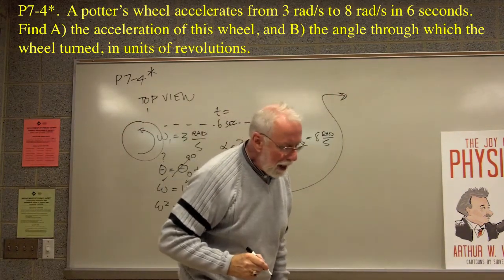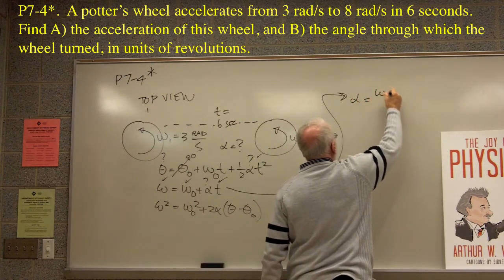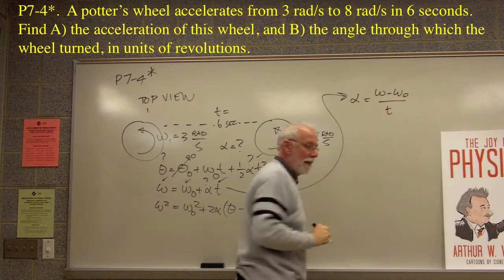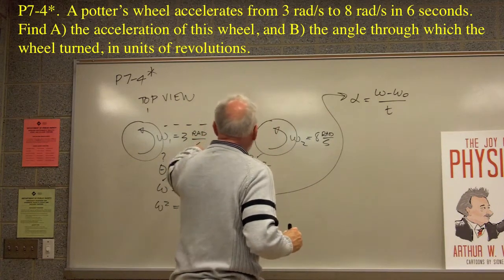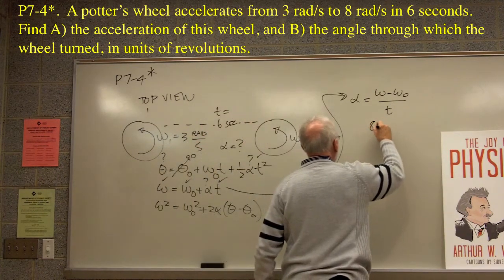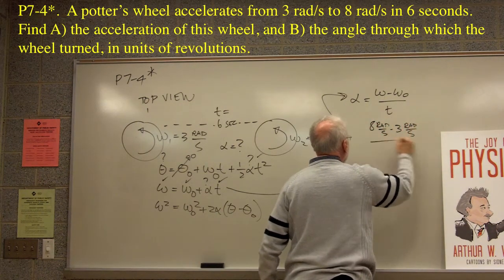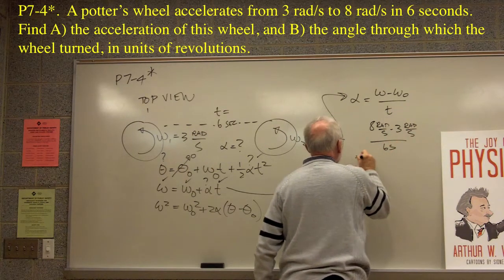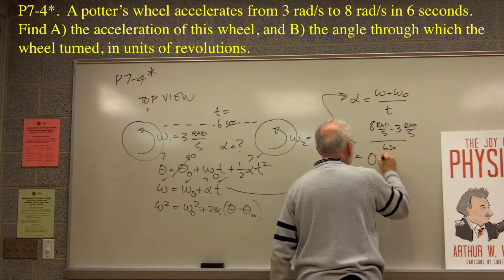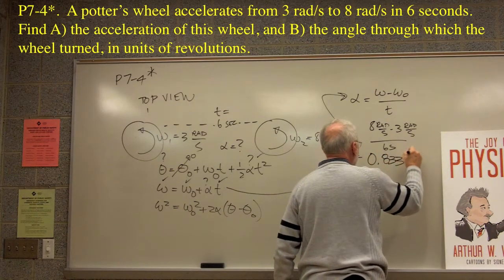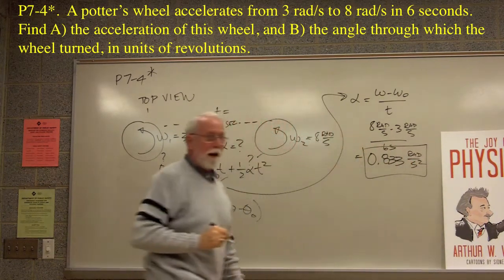And I think, let's see, this is the A part of the problem. It says alpha equals omega minus omega-0 divided by t. So then, that's easy enough. Eight radians per second minus three radians per second divided by six seconds. This whole thing then turns out to be 0.833 radians per second squared. There's our alpha. Good.